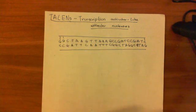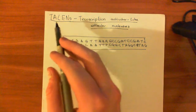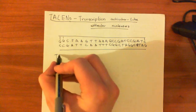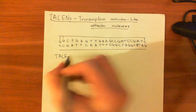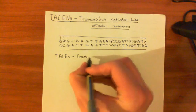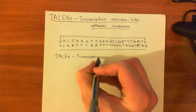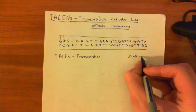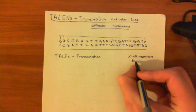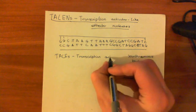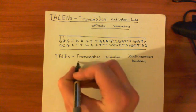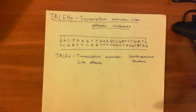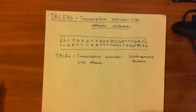Basically what TALENs are made out of is Transcription Activator-Like Effector proteins, often called just TALEs for short. These are proteins secreted by certain bacteria known as Xanthomonas. Xanthomonas species of bacteria secrete these Transcription Activator-Like Effectors, and what they do is bind to DNA at a specific nucleotide.